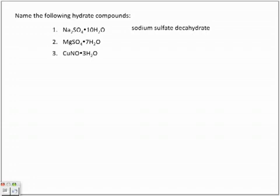Next one is magnesium sulfate. We have seven waters associated with it, so we have magnesium sulfate heptahydrate.